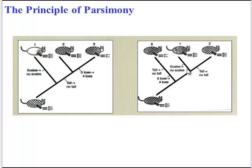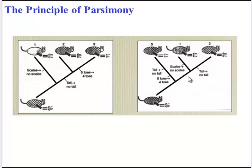Phylogenetic trees are built using the principle of parsimony. Keep in mind that phylogenetic trees are hypotheses and they can change based on new data. Here are two different trees — two different hypotheses for the relationship among these organisms. This first tree relies on three different evolutionary events: scales versus no scales, tail to no tail, and five toes to four toes. The second tree, however, involves four evolutionary events. So biologists would choose the first tree because it's easier to believe that three derived traits evolved than four.